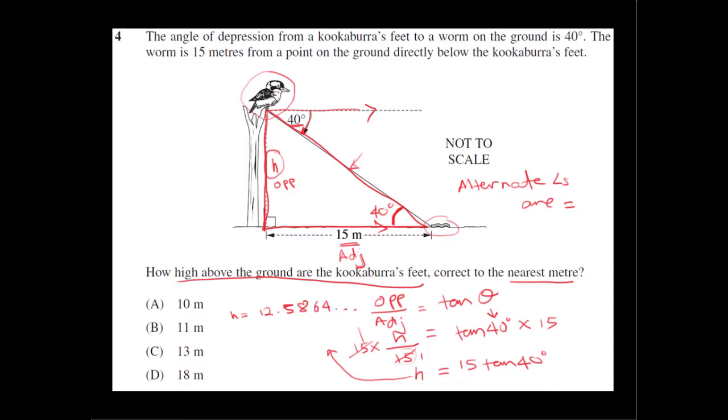Okay, so we need to round off to the nearest meter. So since this is a 5, if this number is 5 or more, we need to increase 12 by 1. So since it's a 5, this becomes, it rounds off to 13. So, our answer is C for that question.